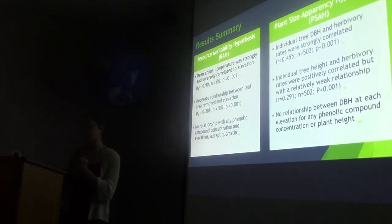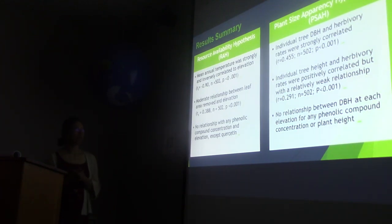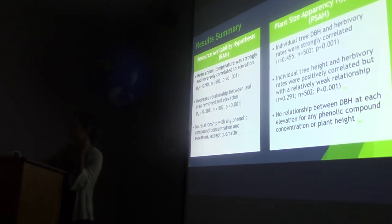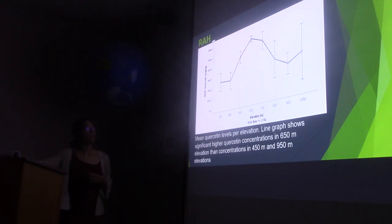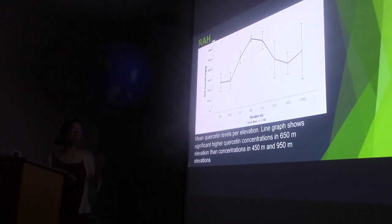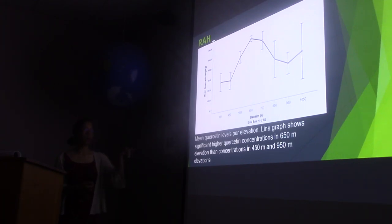In terms of chemical defense, there was no considerable phenolic compound concentration relationship by elevation, except for quercetin — and even that did not match the expected trend. The line graph shows a spike in quercetin concentrations at the 650-meter interval, with lower concentrations at the 450 and 950-meter elevations.